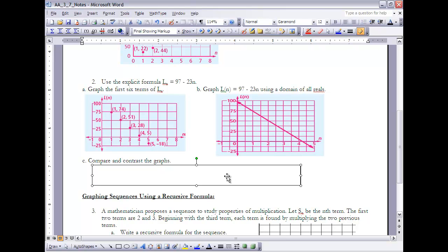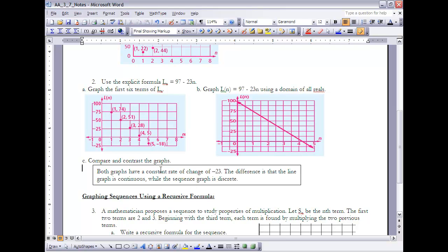Finally, it says to compare and contrast those graphs. Both of the graphs have that constant change of -23. If I were to plot a point here at 0, it would also be at 97, the same as over here. The main difference, though, is that this line is continuous, whereas this line over here is a discrete graph.